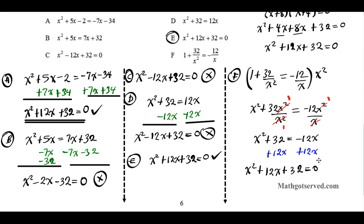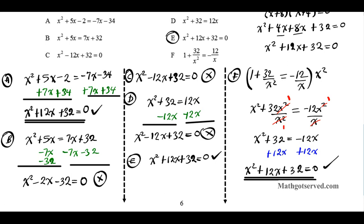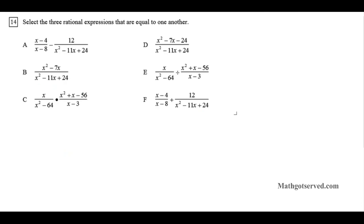This matches our target equation, so option F is also a match. The equations with roots of negative 8 and negative 4 are options A, E, and F.